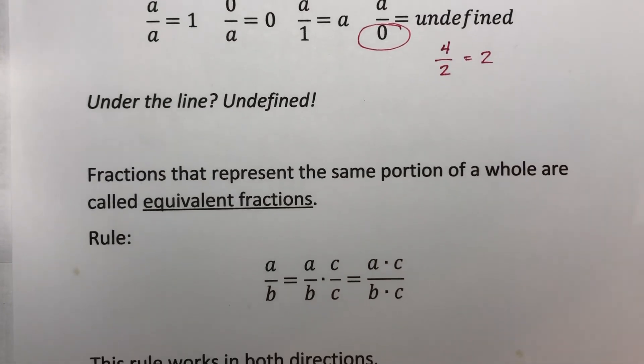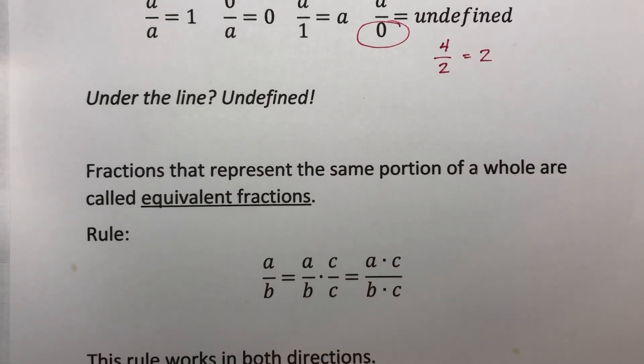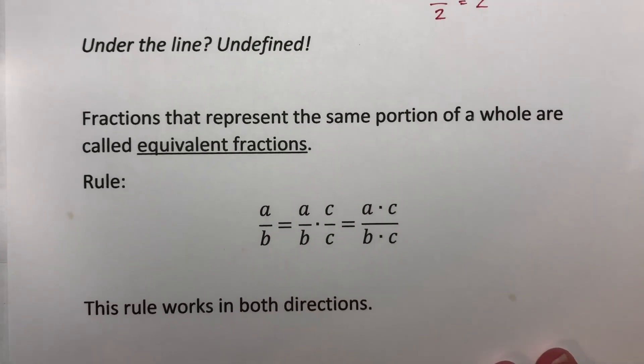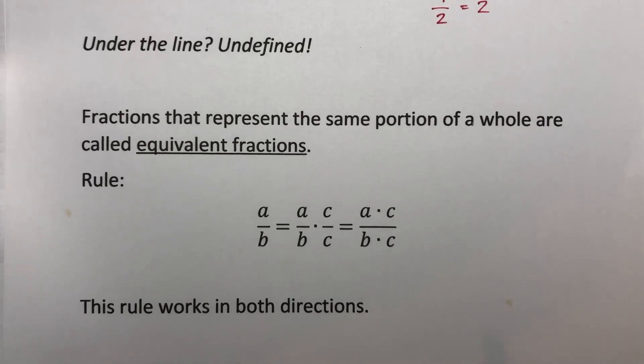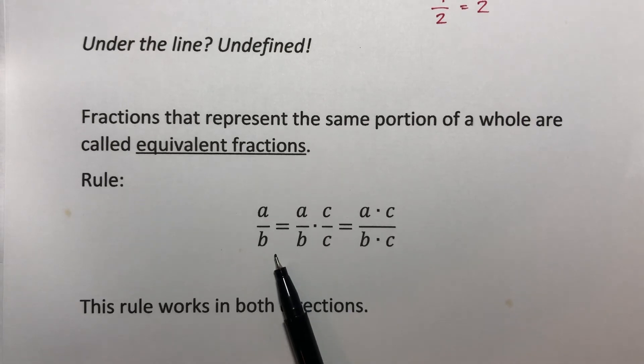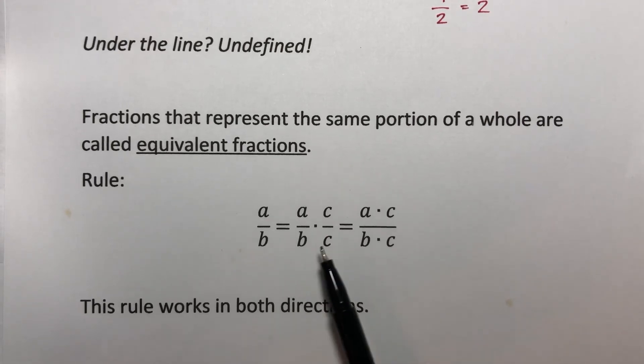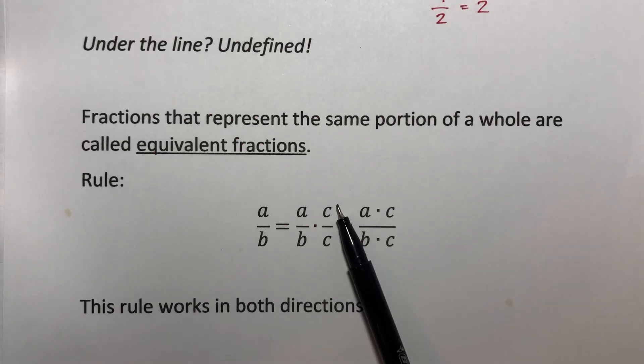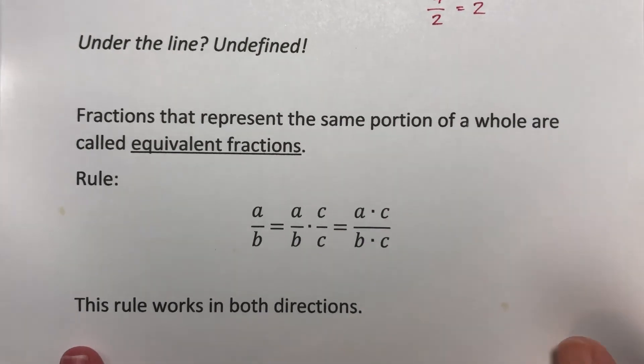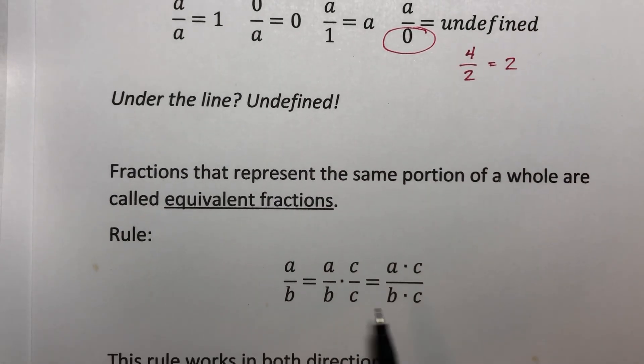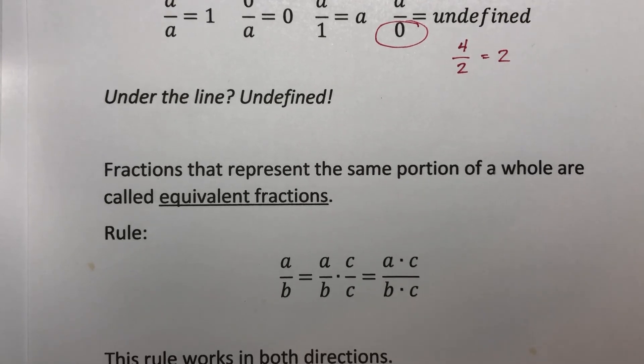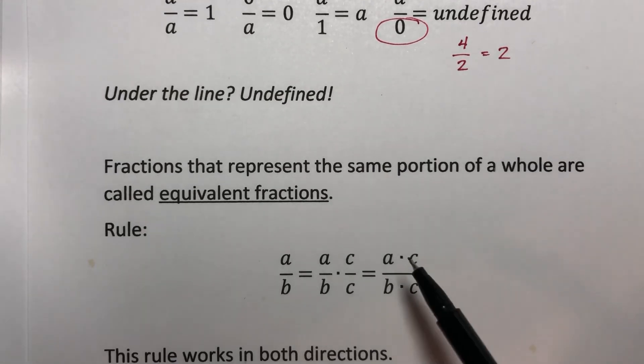Fractions that represent the same portion of a whole are called equivalent fractions. This is one of the most basic rules for fractions and it works in both directions. If you have a general fraction A over B, we are allowed to multiply that fraction by C over C. This is just saying it's the same value on the top and the bottom. What we talked about earlier is if you have the same on the top and the bottom, that's one. So really we're saying that you can multiply this fraction by one and it's the same thing.